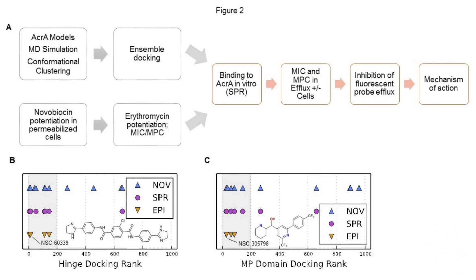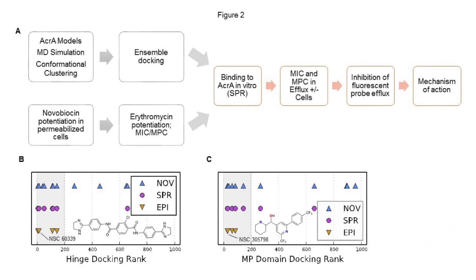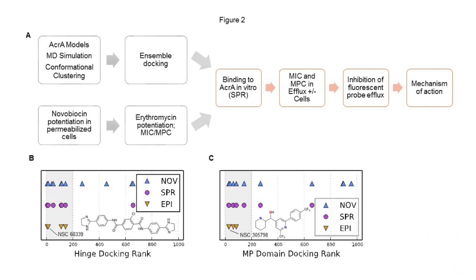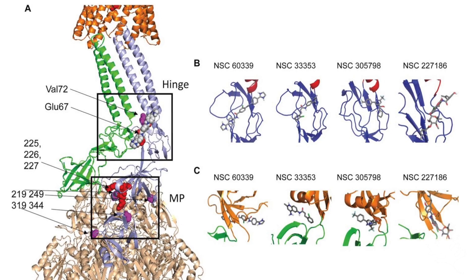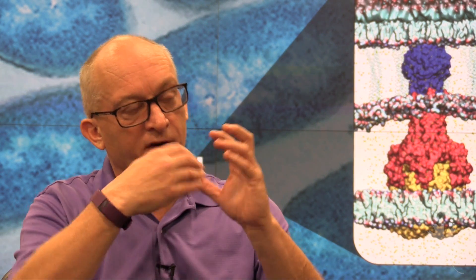The way we do it is we do something called docking, like a key in a lock. So the lock would be part of the efflux pump and you need to find a key that fits it. And what Titan can do is search through millions of these keys very quickly to find out which ones are most likely to fit. That's what was done in the supercomputing.